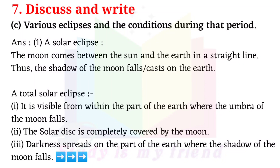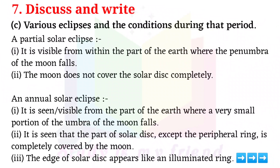Types of solar eclipse: 1. A solar eclipse occurs when the moon comes between the sun and earth in a straight line, and the shadow of the moon falls on the earth. 2. A total solar eclipse is visible from within the part of the earth where the umbra of the moon falls — the solar disk is completely covered by the moon, and darkness spreads on that part of the earth. 3. A partial solar eclipse is visible from within the part of the earth where the penumbra of the moon falls — the moon does not cover the solar disk completely.